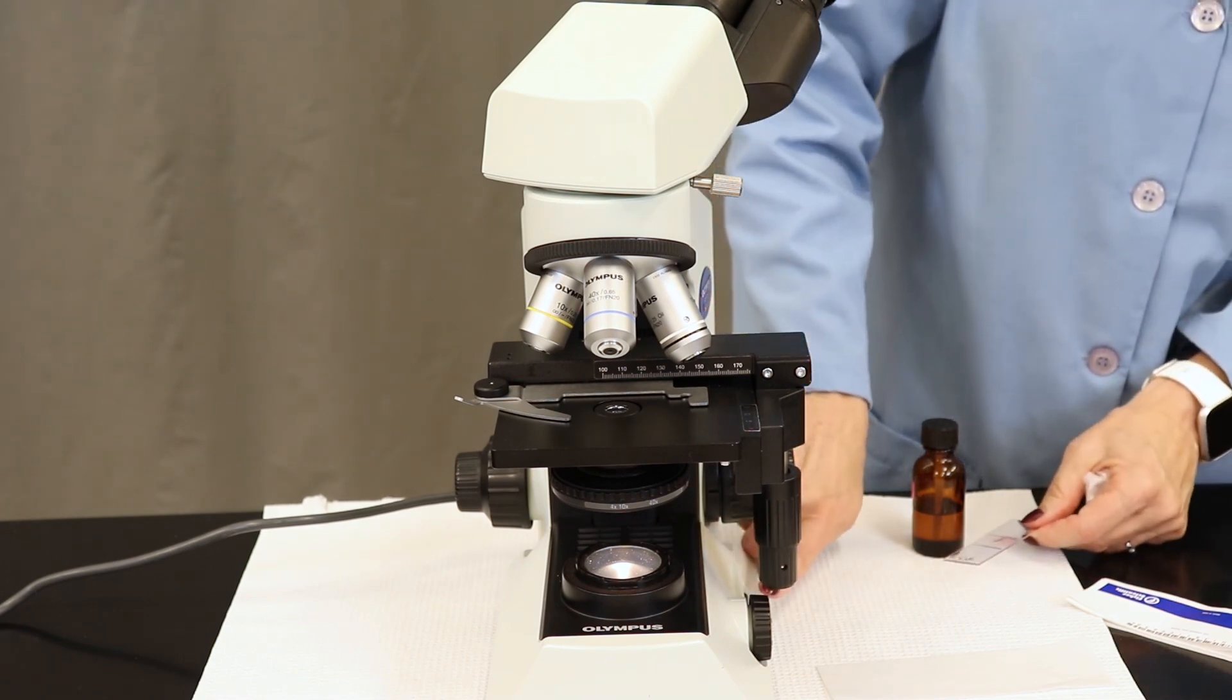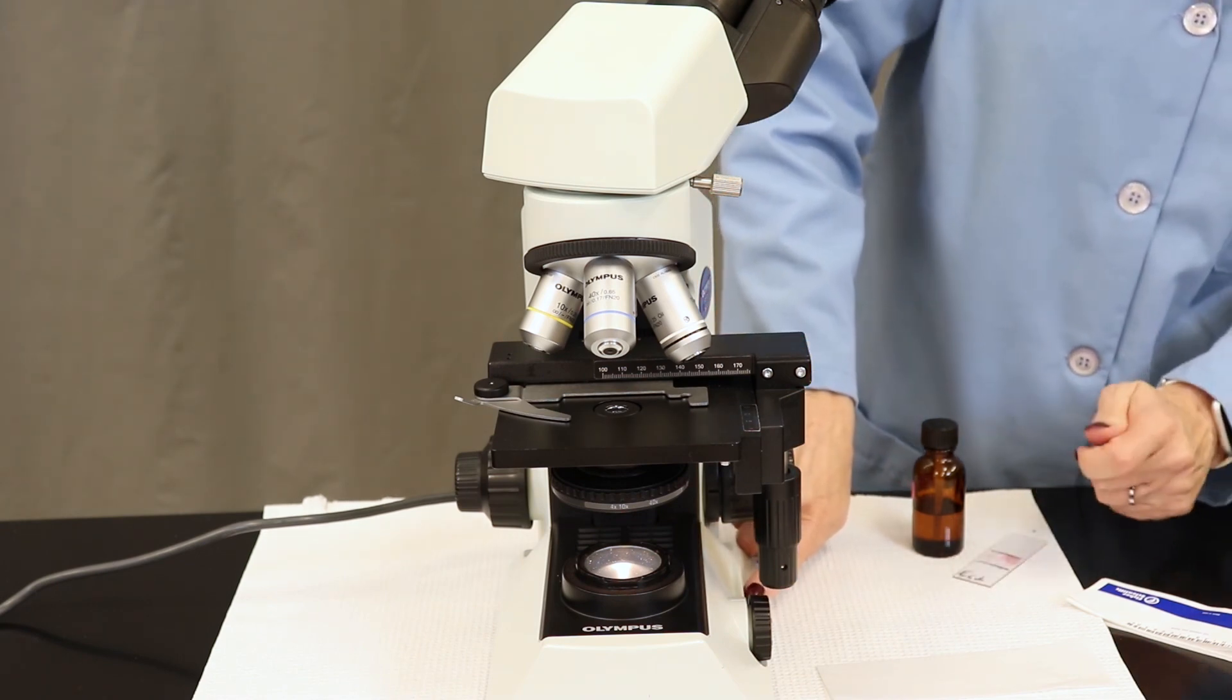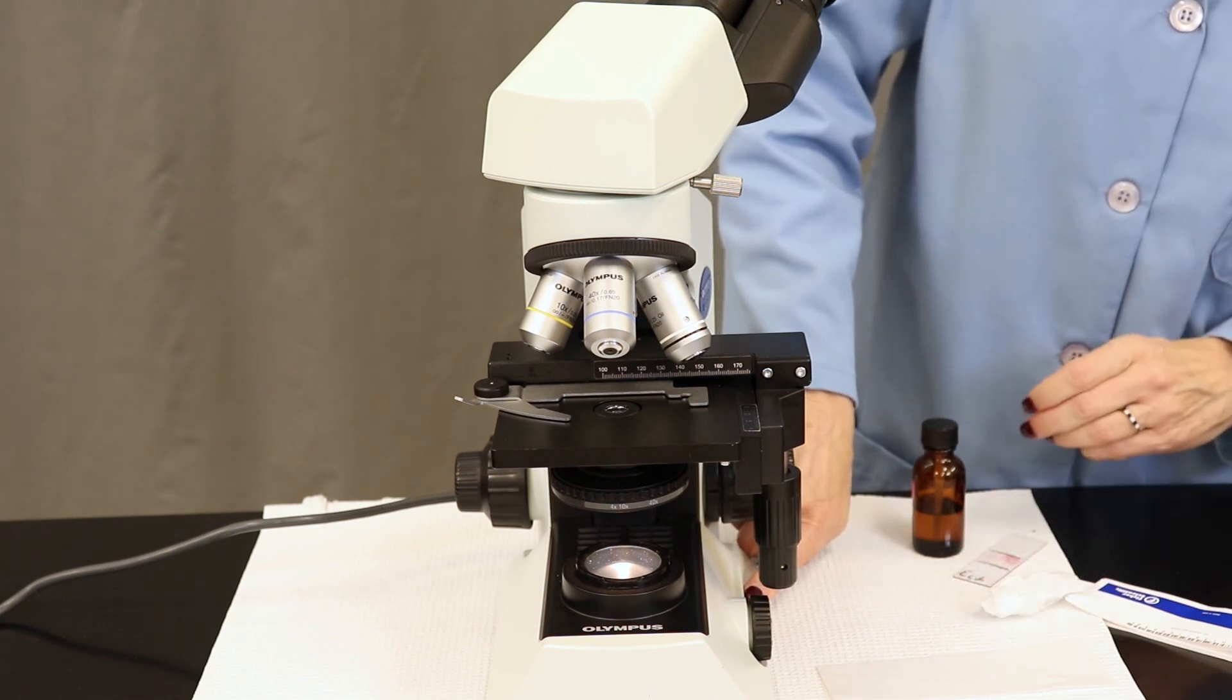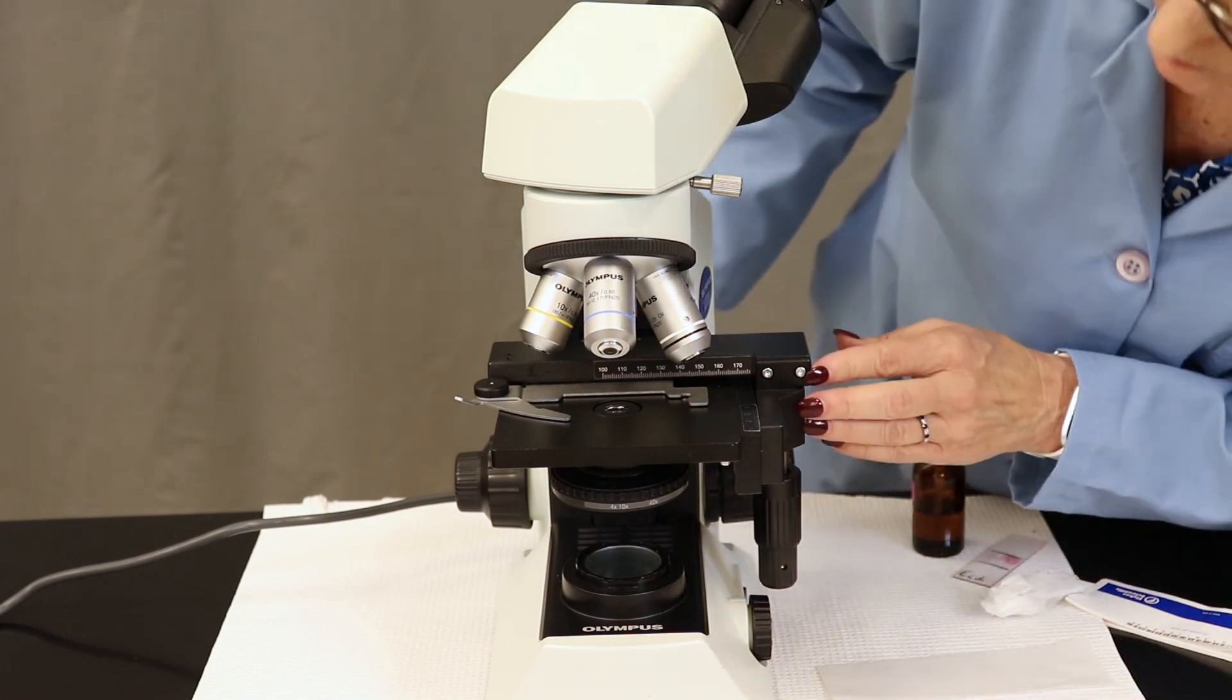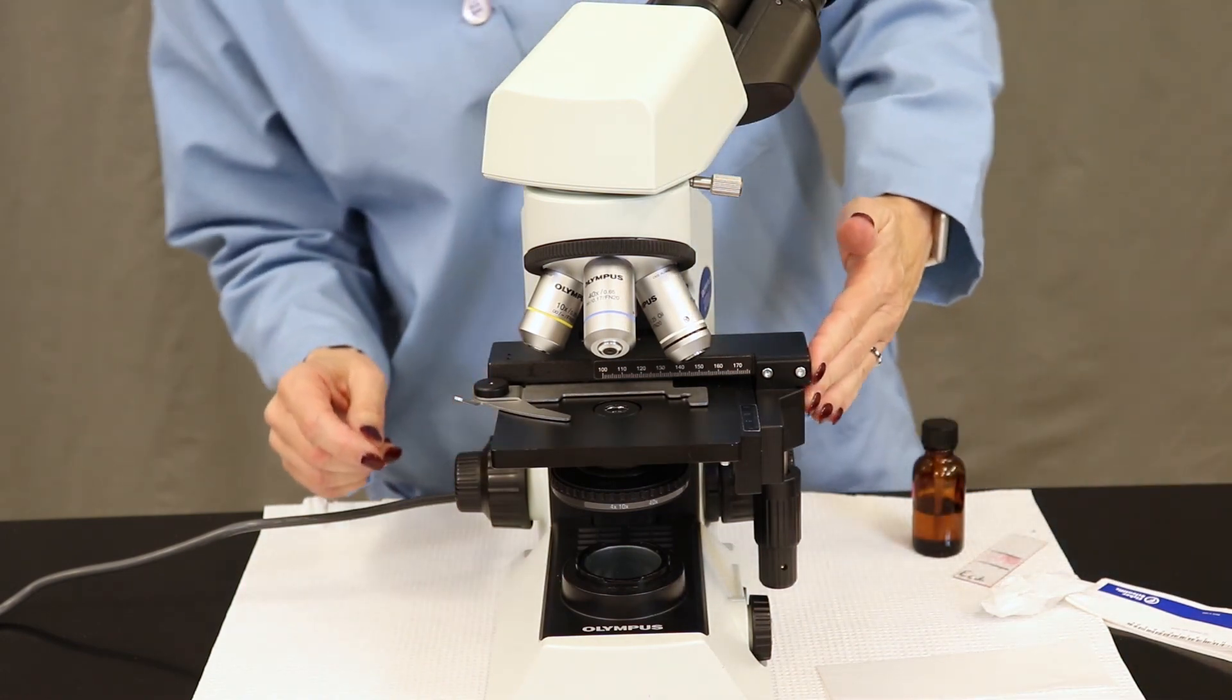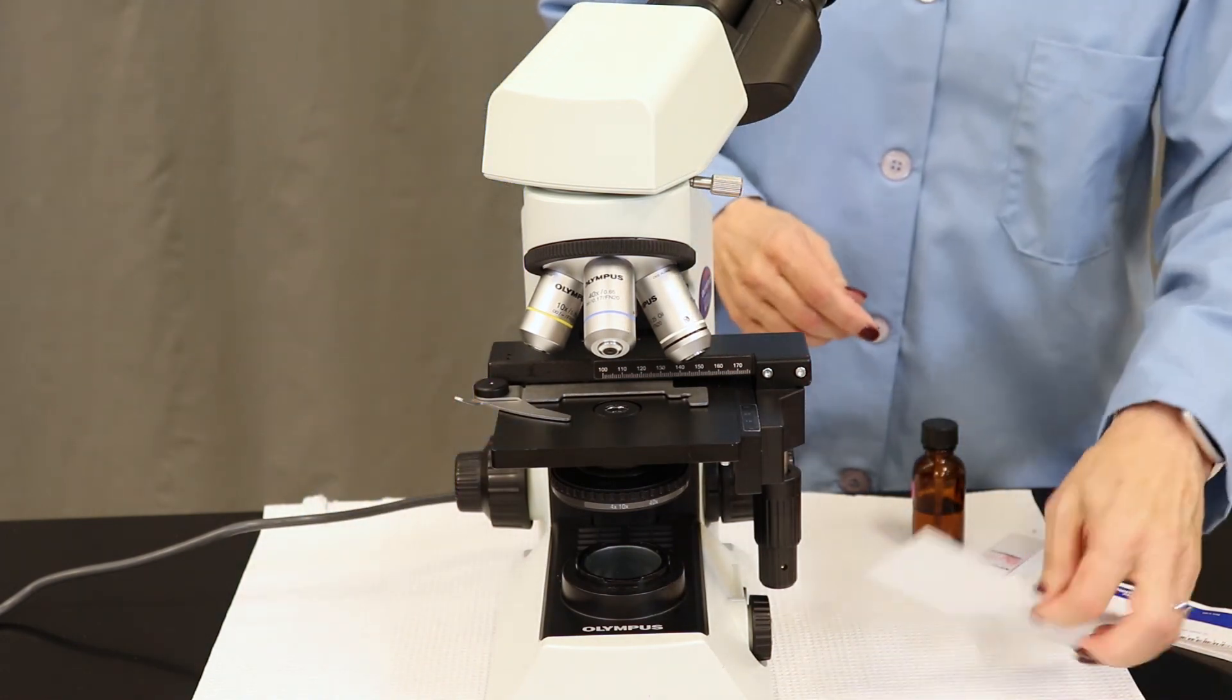Next, remove the glass slide from the stage. Be sure to dispose of it in the proper waste before you leave. Check the stage and the rest of the microscope for any other oil. Anything that looks greasy, you're going to want to wipe off with a fresh piece of lens paper.